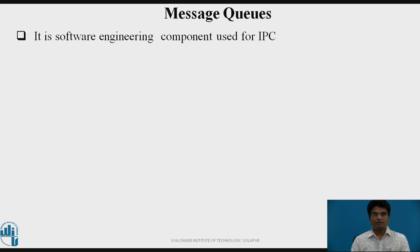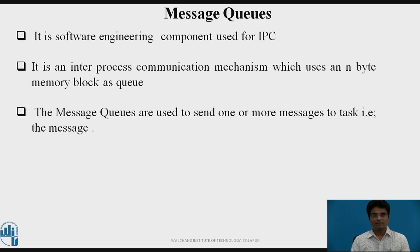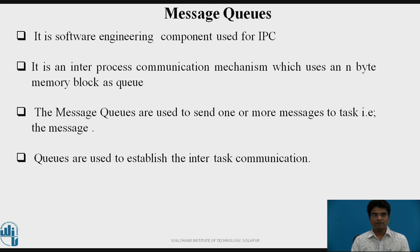Message Queues: It is a software engineering component used for IPC — Interprocess Communication. It is an inter-process communication mechanism which uses an n-byte memory block as a queue. Message queues are used to send one or more messages to a task, and queues are used to establish inter-task communication.